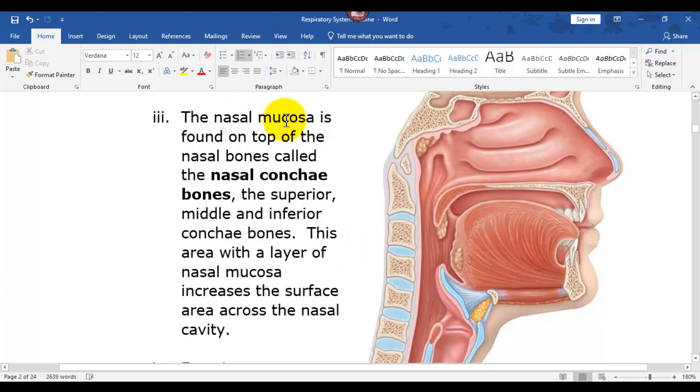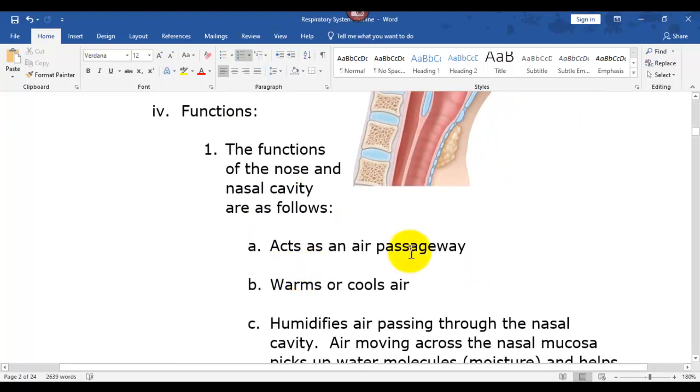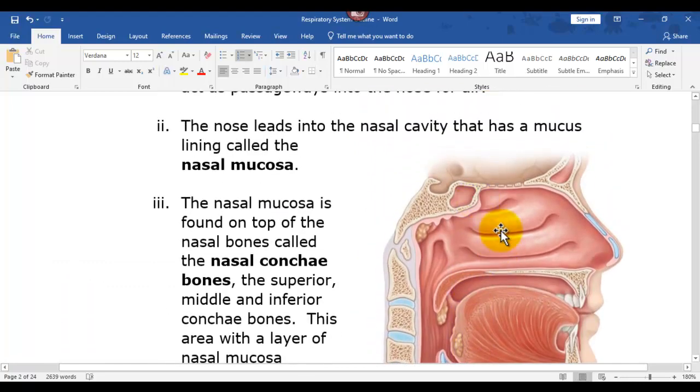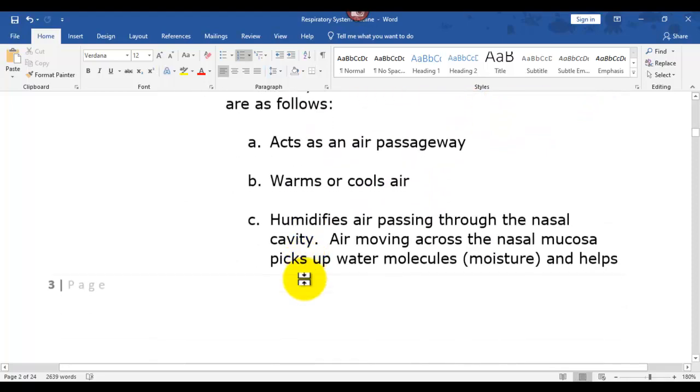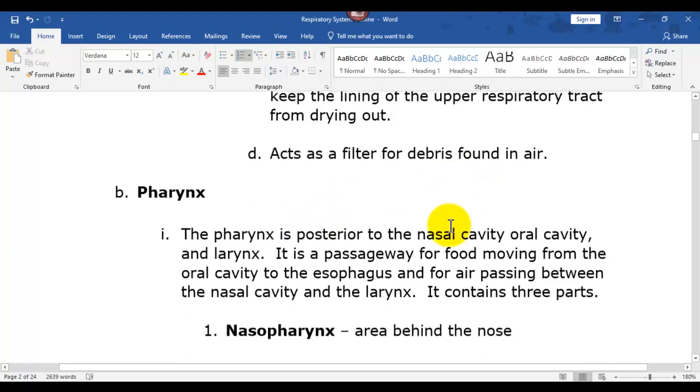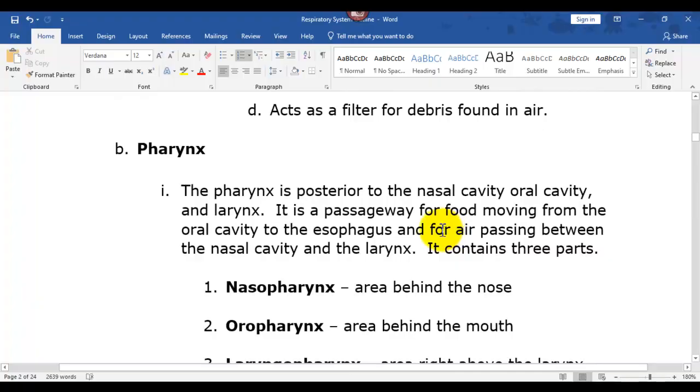So it says there the nasal mucosa, which is this layer on top, and then there are the bones. The functions: it does act as a passageway. The nose warms and cools the air. It humidifies it because once it goes across this area, it picks up water molecules. And then this whole area here is called the pharynx, and it's actually divided into three sections. It acts as a filter for debris from the air. That's a great function of the nose.